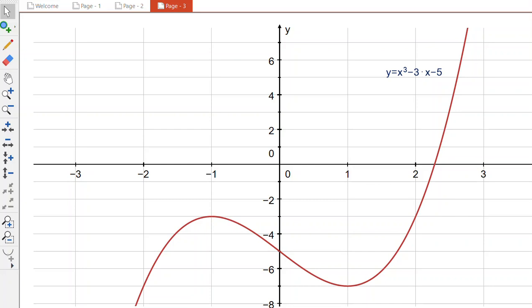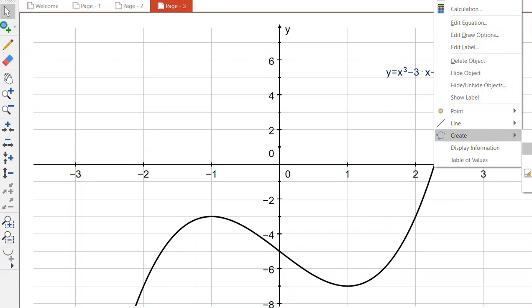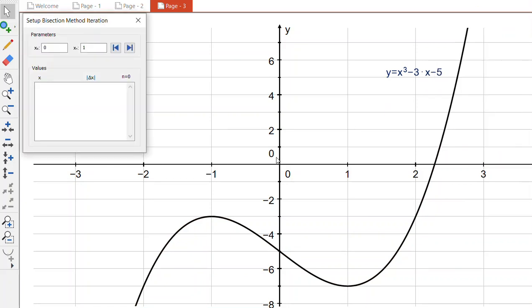Now let's look at interval bisection. We've got the curve here x cubed minus 3x minus 5 and we're going to create a bisection iteration.